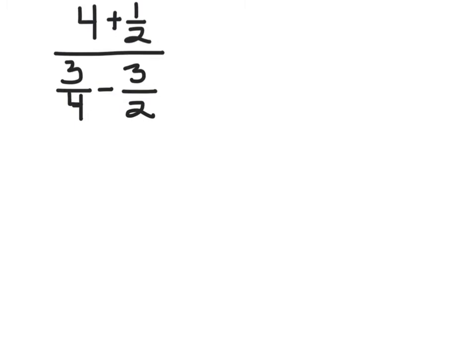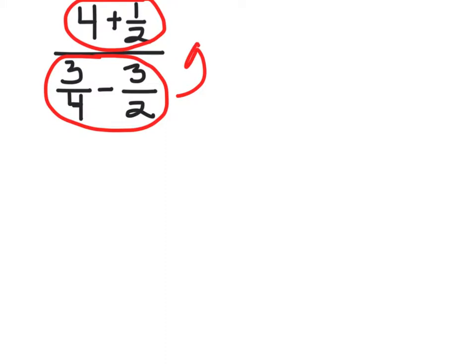To simplify this, do the numerator — get it to one fraction — do the denominator — get it to one fraction — and then flip and multiply. If we do 4 plus 1 half, we change the 4 to 8 halves, and 8 halves plus 1 half gives you 9 halves, so the numerator is 9 halves.